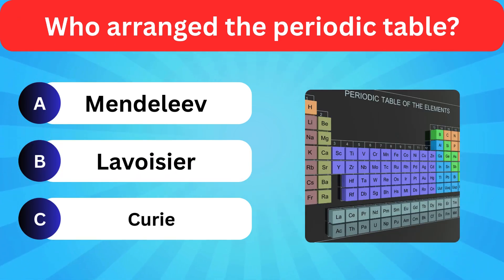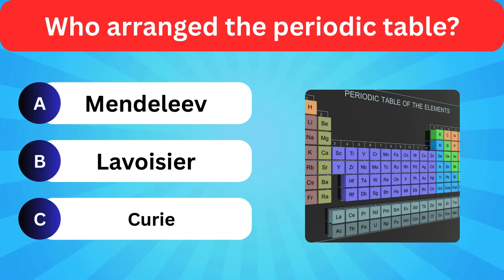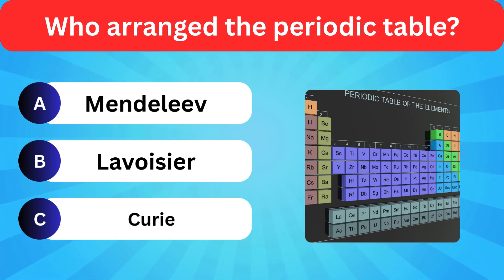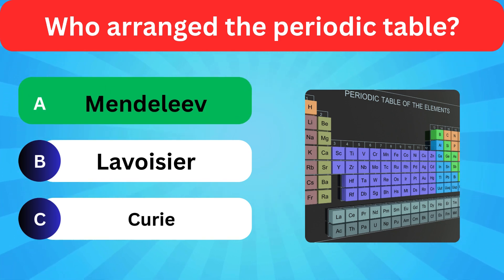Who arranged the periodic table? Options: Mendeleev, Lavoisier, Curie. Correct answer is Mendeleev.